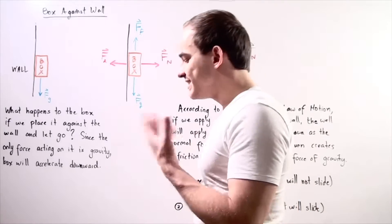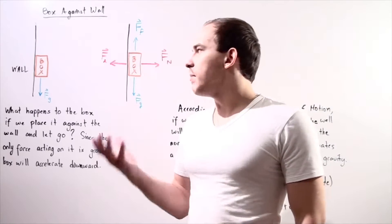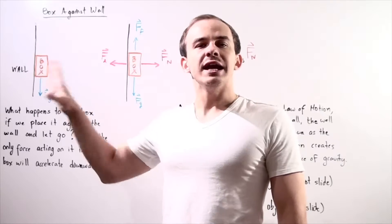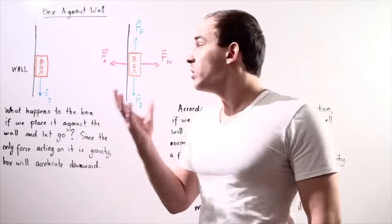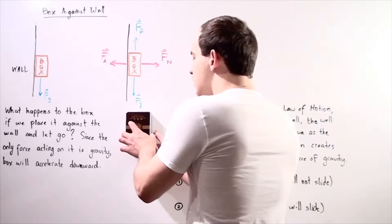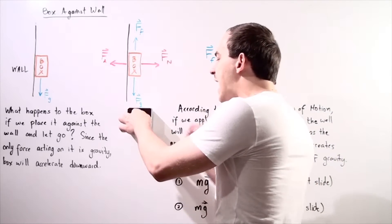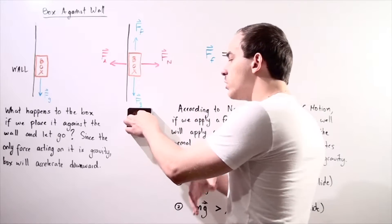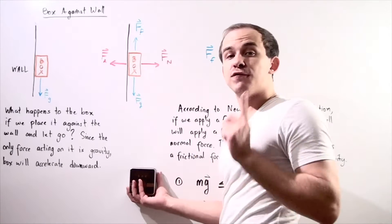Let's look at the following conceptual example. Suppose I take a box and place it against the wall, then let go. What will happen to my box? If we let go, we see that the box actually does in fact fall.